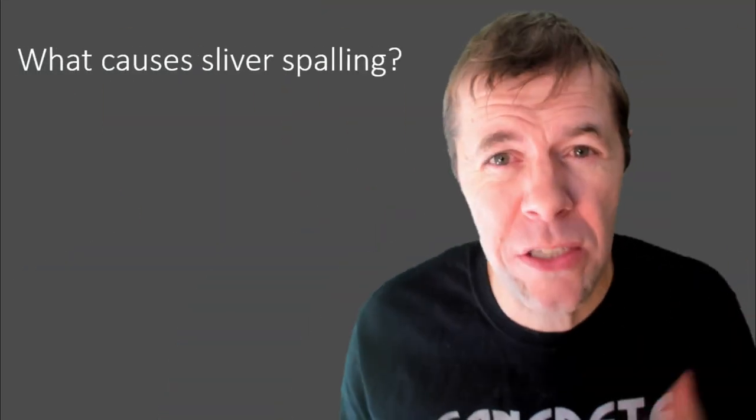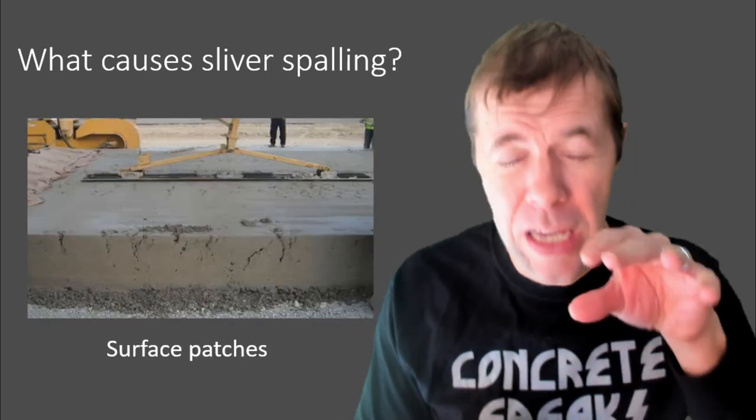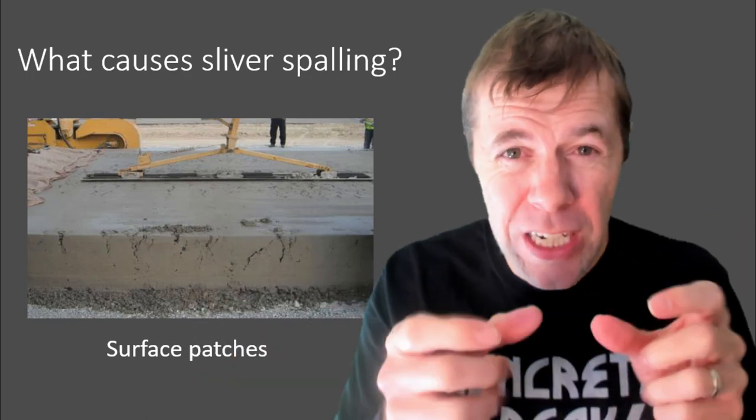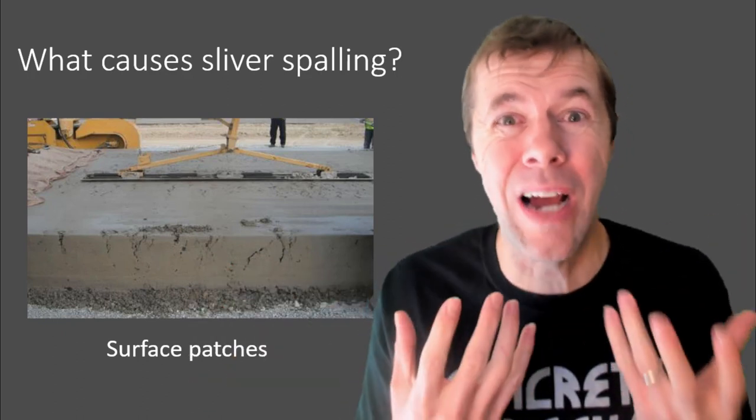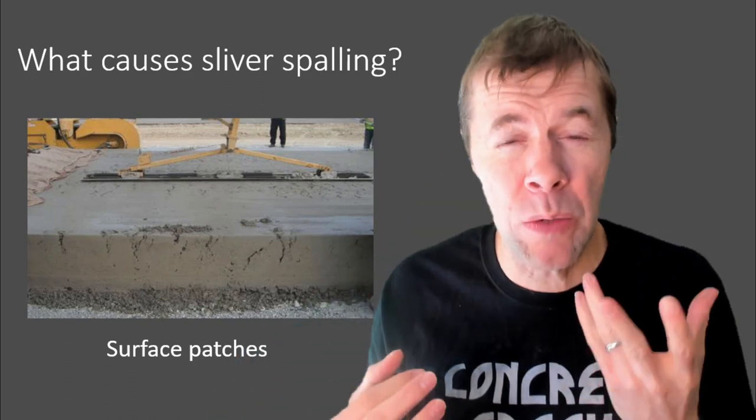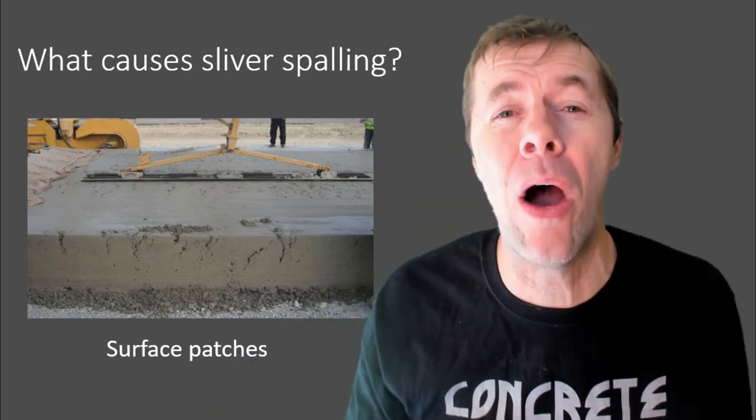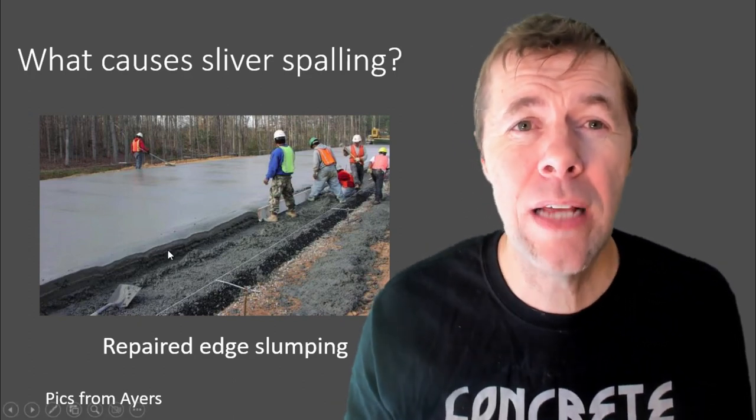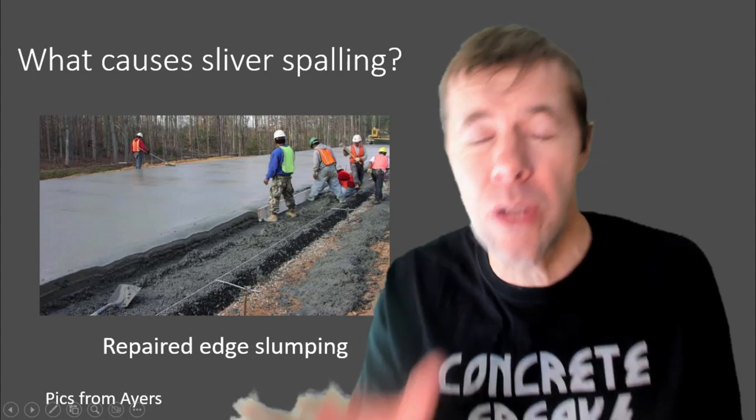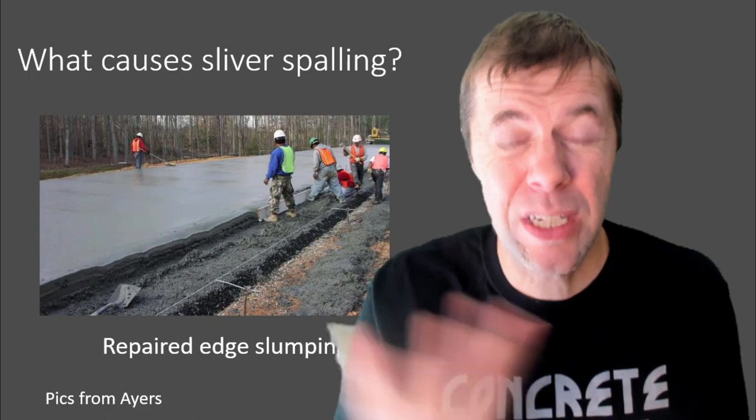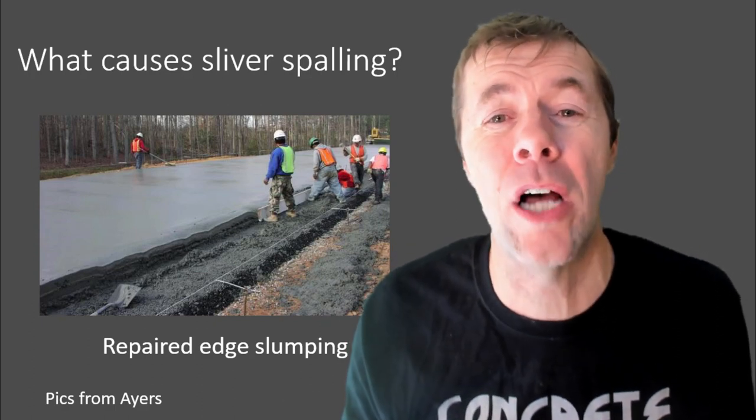So what causes this sliver spalling? Well, it could be patches in the concrete you have to make when you're finishing it. There's voids in the concrete. It didn't consolidate well. So you have to come back in, fill those in with grout, and they may pop out. It could be repairing an edge slump. See how this edge slumping is not straight. See how it wanders. Well, as you have to push that up or put more mortar on top, that can spall and deteriorate and cause problems.